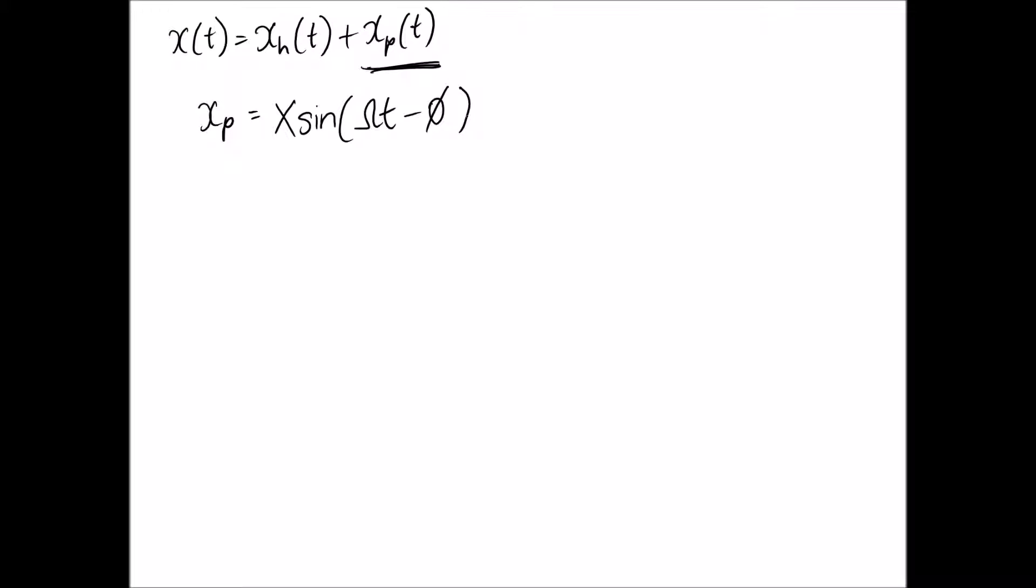So we know that xp has to be of the form x sin omega t minus phi, when we have a forcing function of the form F0 sin omega t. You can determine x and phi, the two constants, from scratch using your methods for solving differential equations. But it's a little bit easier just to substitute in from the general form.